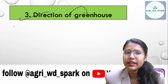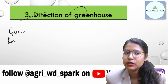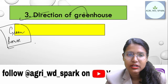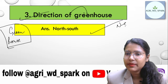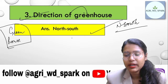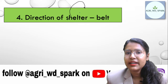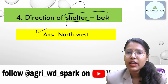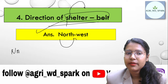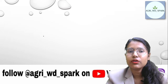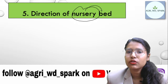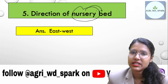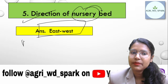For a shelterbelt, the direction you put it in is north-west. In the north-west direction, you place the shelterbelt. Next, nursery beds — where you generally grow crops before transplanting — you keep the nursery bed in the east-west direction.